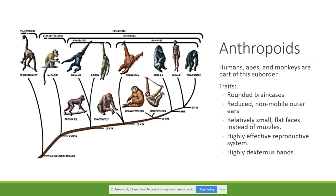Additional anthropoid traits include reduced non-mobile outer ears, relatively small flat faces instead of muzzles, a highly effective reproductive system, and highly dexterous hands. When talking about the hands, anthropoids have more joints and more dexterity in doing things with their hands than prosimians.